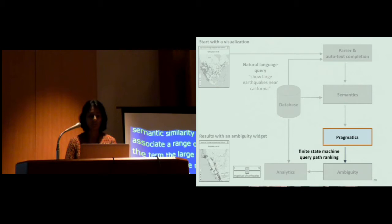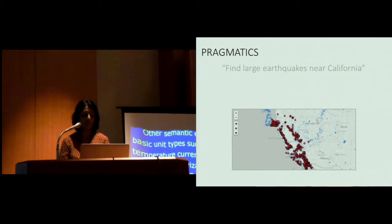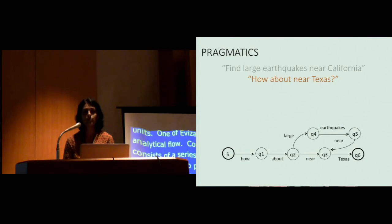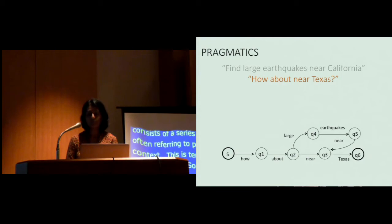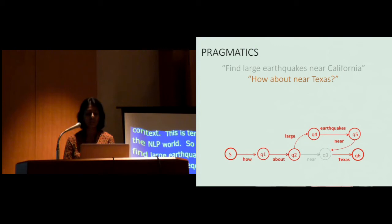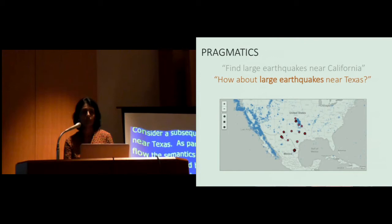One of Evisa's goals is to support analytical flow by enabling the user to have a conversation with the visualization. Conversation frequently consists of a series of related utterances often referring to past references and context. This is termed as pragmatics in the NLP world. So my initial query is find large earthquakes near California. Consider a subsequent query, how about near Texas? As part of this conversational flow, the semantics of a particular query can be influenced by each other via transitional probabilities. There are multiple probable paths as seen here in this finite state machine. Attributes from the previous states, such as large and earthquakes, are all augmented to the given query, giving a higher product of their corresponding transitional probabilities in the finite state machine, leading to showing large earthquakes for Texas in the visualization.